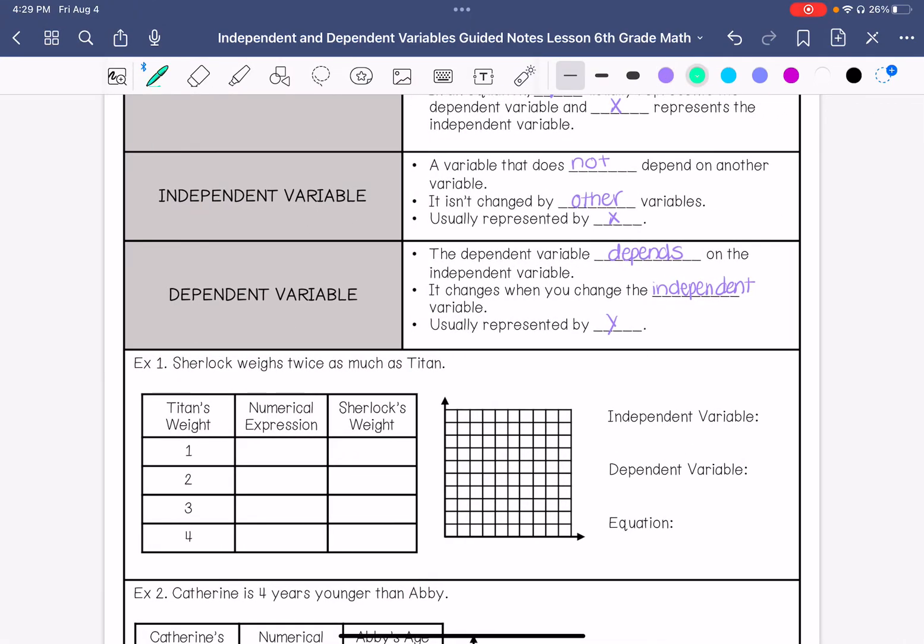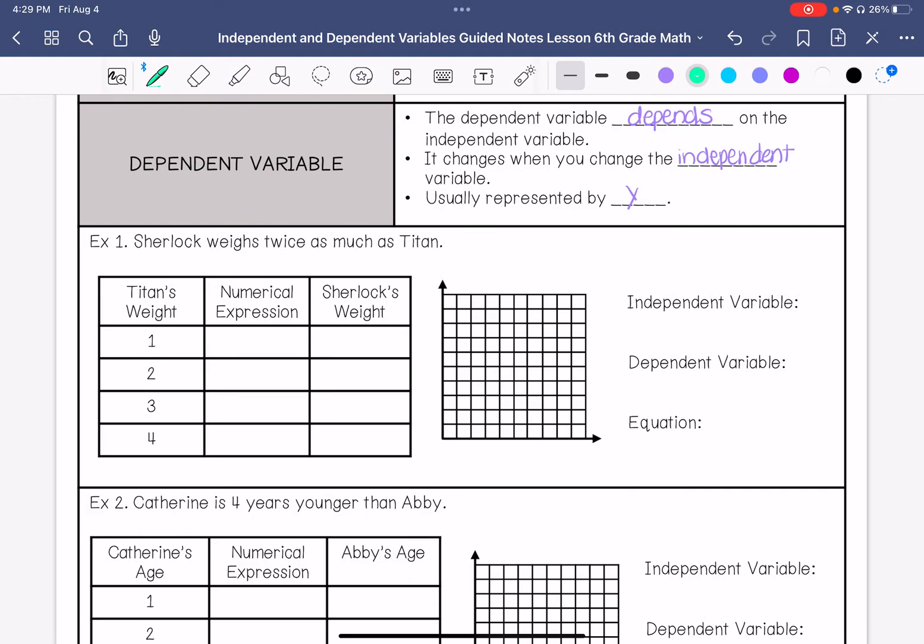We are going to do a couple of examples here. This says Sherlock weighs twice as much as Titan. Our numerical expression for this is we would be multiplying Titan's weight by 2 because it's twice as much.